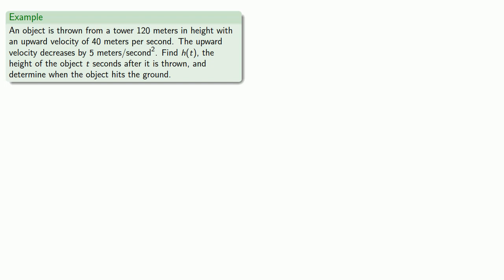So let's consider a problem. We have an object thrown from a tower of some height and with an upward velocity of some amount, and we know something about the upward velocity change. We want to find h of t, the height of the object, and determine when the object hits the ground. Given all of this information, it's helpful to consider the units of h of t, and since we've learned how to differentiate, we might consider the derivatives of h of t.